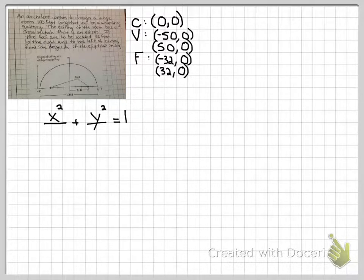They gave me the vertices. I know the major axis this time is the x-axis, because the x values are the ones that are changing in the vertices. Since they're 50, 0, 50 squared gives me 2500 for a squared. It's y squared that I'm going to need to find out.